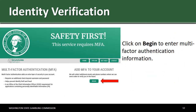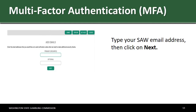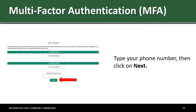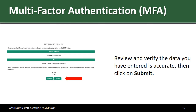Click on Begin to enter multi-factor authentication information. Type your SAW email address, then click on Next. Type your phone number, then click on Next. Review and verify the data you have entered is accurate, then click on Submit.